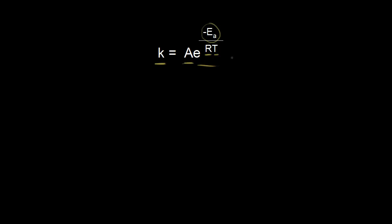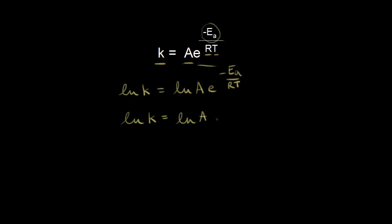There are other forms of the Arrhenius equation which you might want to use depending on the problem. So let's go ahead and find those other forms. We start by taking the natural log of both sides, so we get the natural log of k is equal to the natural log of A times e to the negative Ea over RT. On the right side, we can use a log property: the natural log of A times e to the negative Ea over RT is equal to the natural log of A plus the natural log of e to the negative Ea over RT.